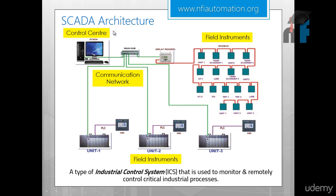In SCADA architecture, we have a control center with a computer system running SCADA, connected via a main hub. This is an Ethernet port. The PLC is connected by an Ethernet board and is overall connected to a CPU. IP addresses are assigned to the PLC, which are read by the computer system.